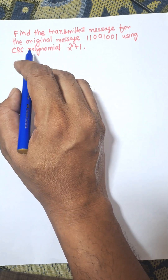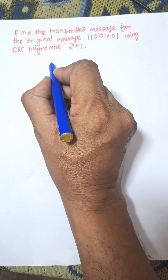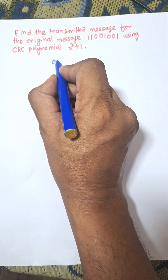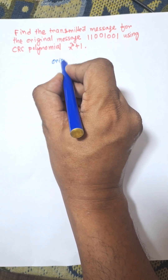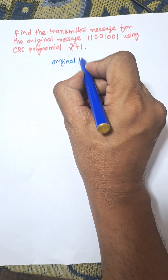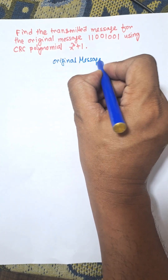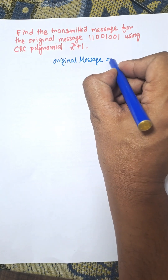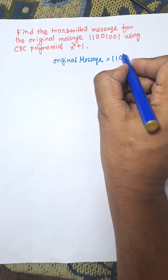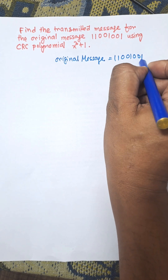CRC means Cyclic Redundancy Check. Here the original message is equal to 11001001.